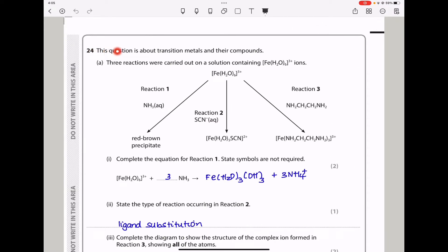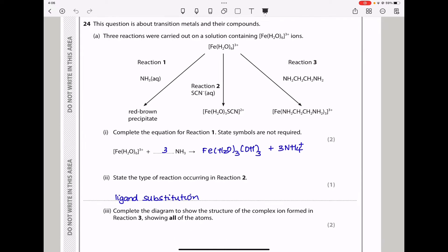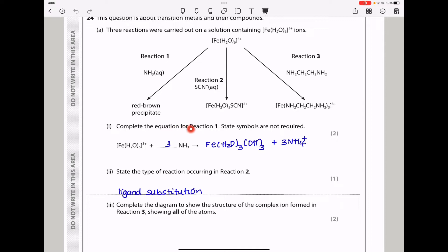Question 24 says, this question is about transition metals and their compounds. Three reactions were carried out on a solution containing hexa-aqua-iron-3-plus ions. So the first question says, complete the equation for reaction 1.